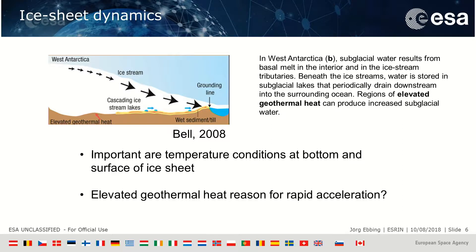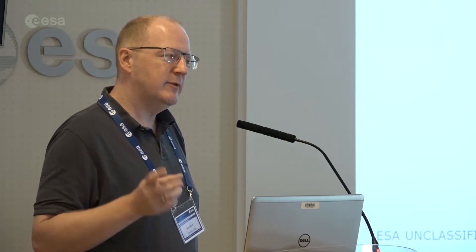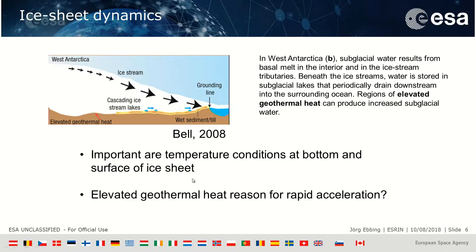Important are the conditions at the bottom and surface of the ice. What we as a solid earth geophysics community can try to do is get a better estimate of what is happening at the bottom of the ice, and quantify how much is the contribution of the solid earth. This is important not only for western Antarctica but also eastern Antarctica, in terms of glacial melting at the base. The question that still bothers me is: why is there elevated geothermal heat, and is it a contribution to the rapid acceleration?